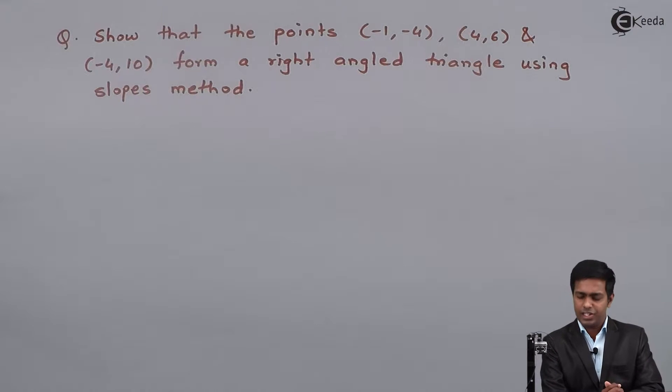Hello friends, in this problem we have to show that the points (-1, -4), (4, 6), and (-4, 10) form a right angled triangle using the slopes method.